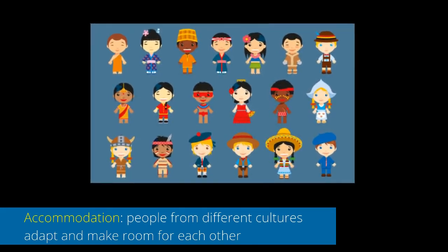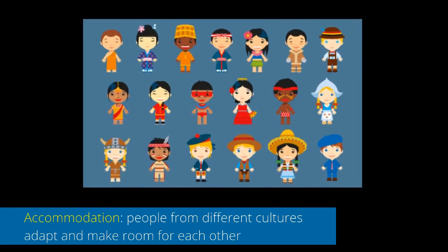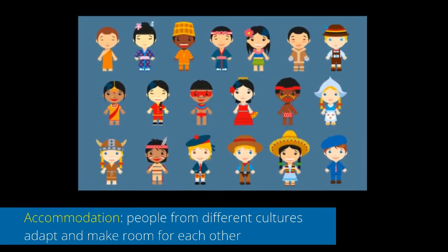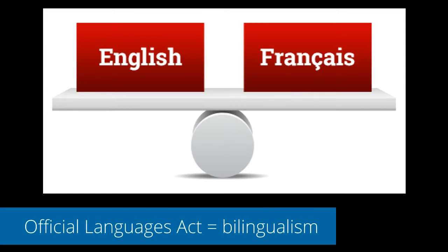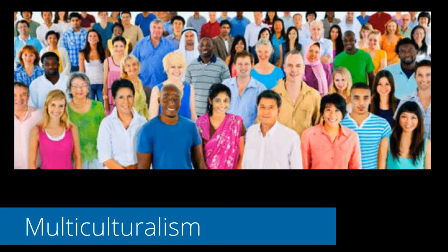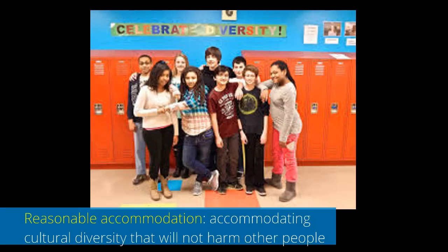Canada has adopted policies of accommodation with legislation such as the Official Languages Act and the Multiculturalism Act. These laws created the policies of bilingualism — English and French are both official languages — and multiculturalism, where all cultures and languages are equal and allowed to exist without discrimination. Another official policy is reasonable accommodation, which states that government institutions such as the RCMP and public schools must accommodate people of different languages, religions and cultures within a reasonable expectation.